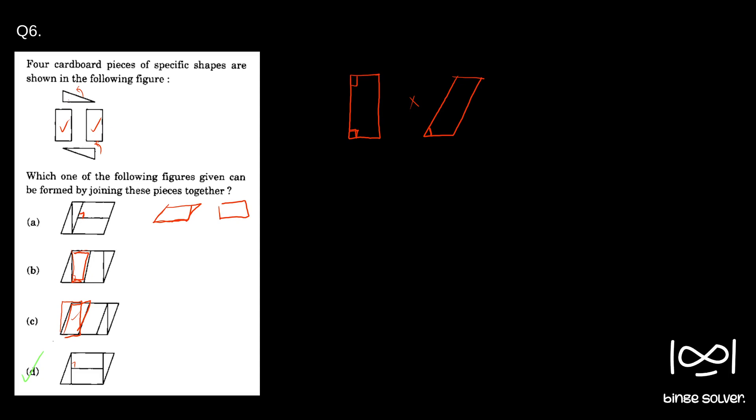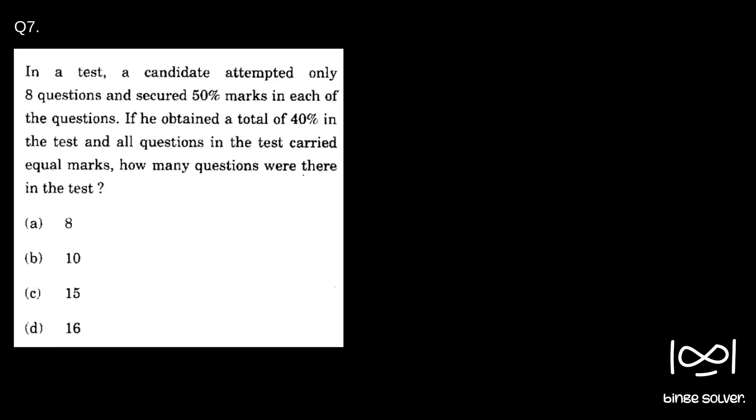Moving on to the next question, question 7. In a test, a candidate attempted only 8 questions and secured 50% marks in each of the questions. If he obtained a total of 40% in the test and all questions in the test carried equal marks, how many questions were there in the test?